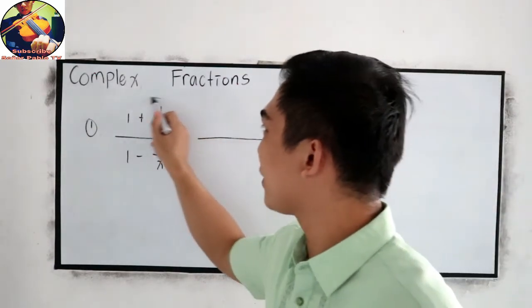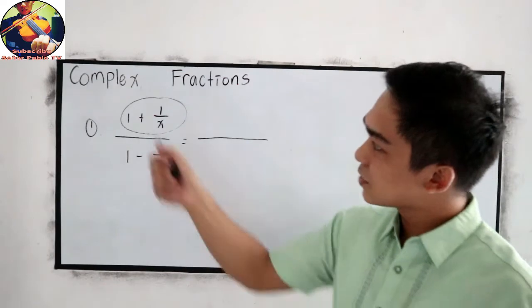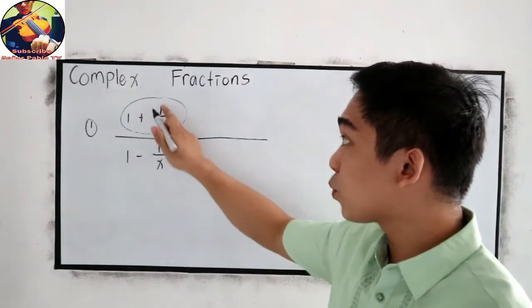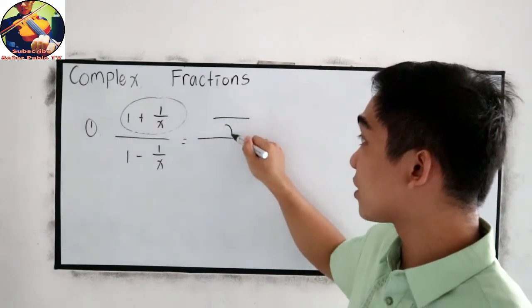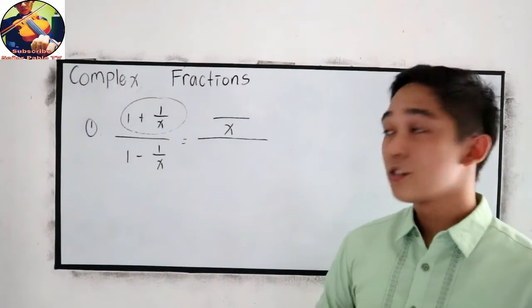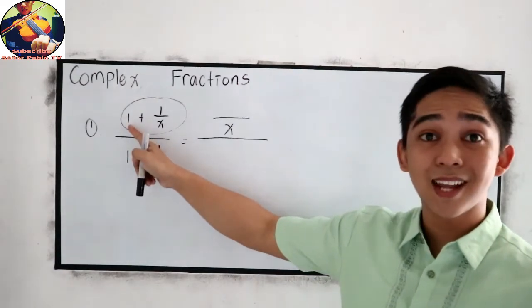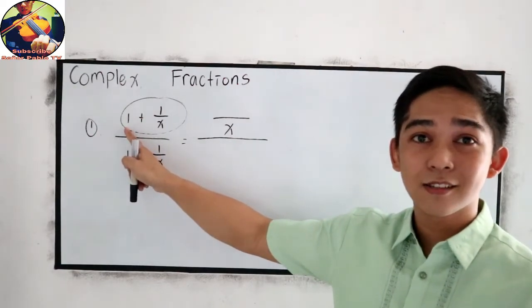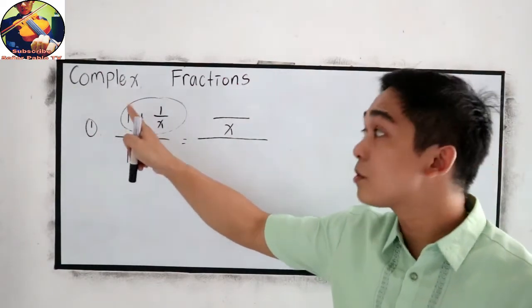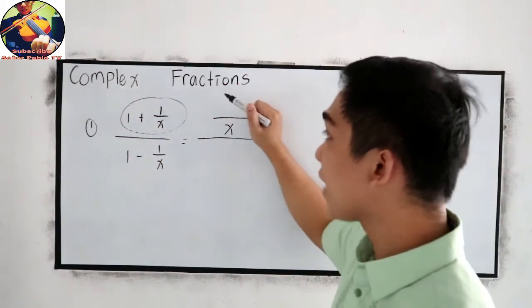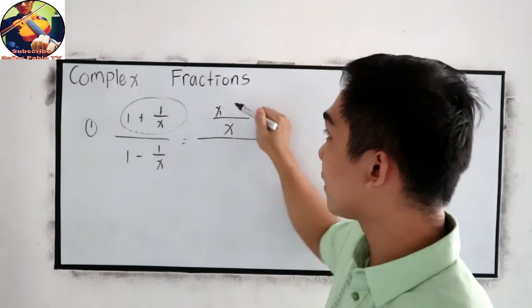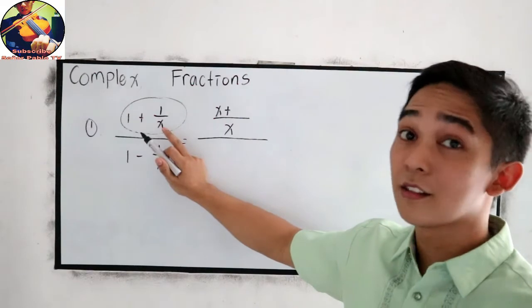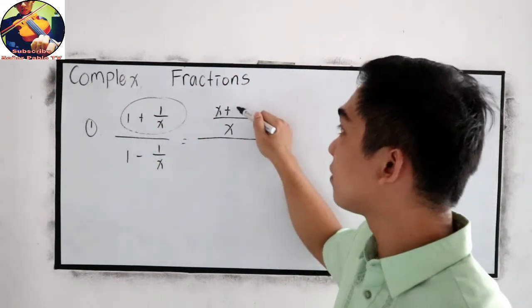So for our numerator, this will be our numerator. Let us first simplify these expressions. 1 plus 1 over x. So get the LCD, which is x. We know that the whole number has a denominator of 1. So x divided by 1, that is x times 1, so 1x or simply x. Copy the plus sign. x divided by x, that is 1, so 1 times 1 is 1.